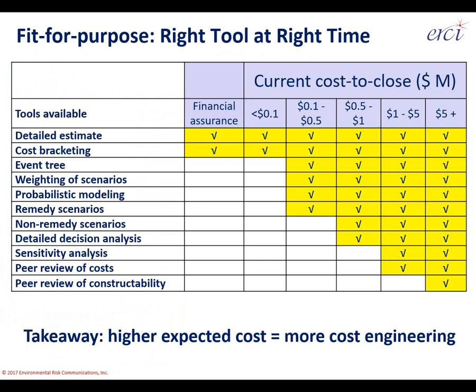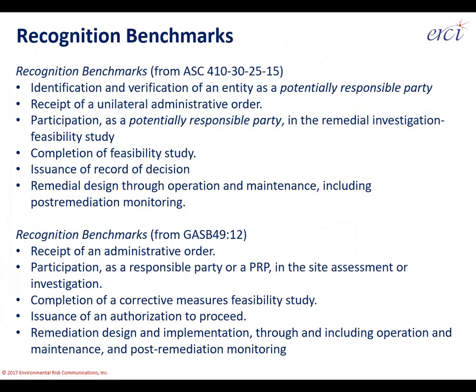There are recognition benchmarks expressed in the accounting literature. The six recognition benchmarks under FASB ASC 410 are listed on the top half of the slide; the five from GASB 49 are on the bottom half. There's lots of commonality because FASB and GASB are actually located in the same office complex in Connecticut — they share staff, funding sources, resources, and depth of expertise.